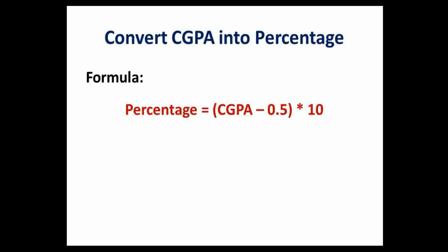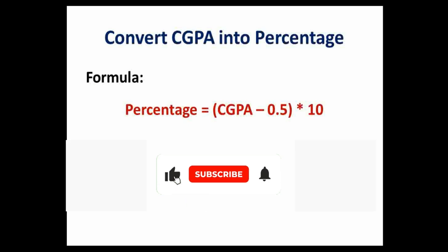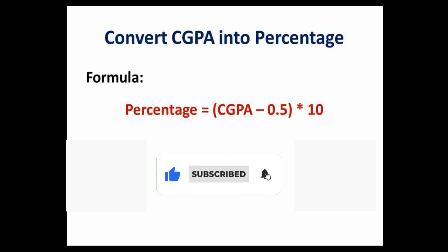This is the formula used for the conversion of CGPA grade points into percentage. The formula is: Percentage = (CGPA − 0.5) × 10. By using this formula, you can convert CGPA into percentage.